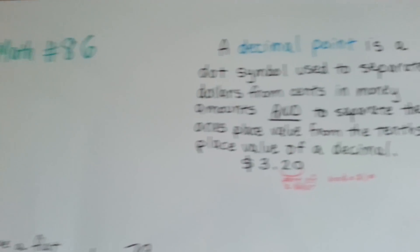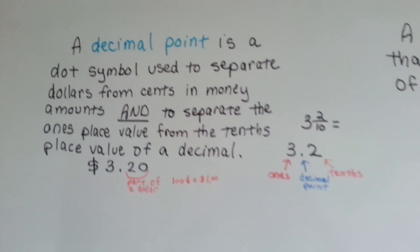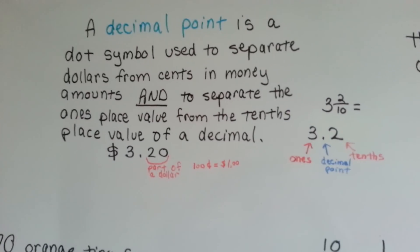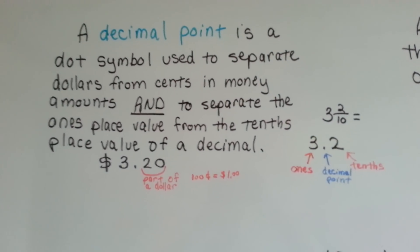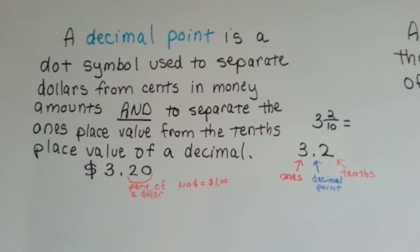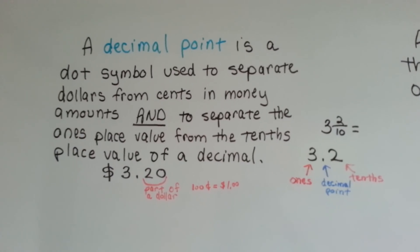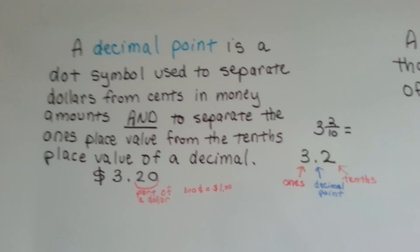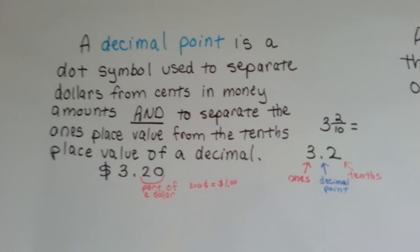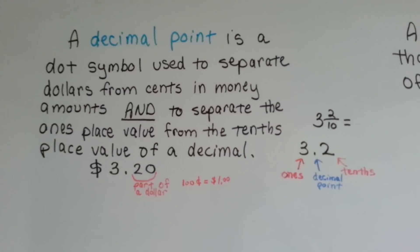We've talked a little bit about this in the last couple videos, but I'm going to go over this with you more thoroughly now. To remind you, a decimal point is a dot symbol used to separate dollars from cents in money amounts, and to separate the ones place value from the tenths place value of a decimal.